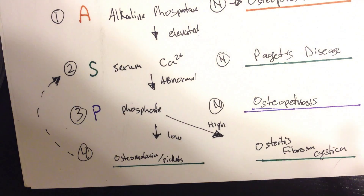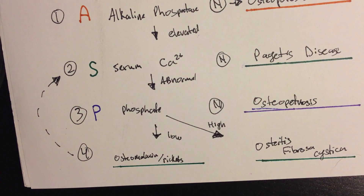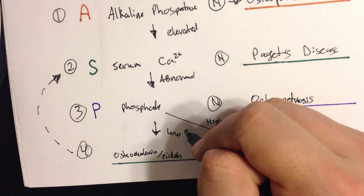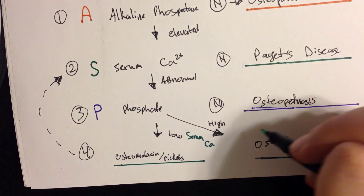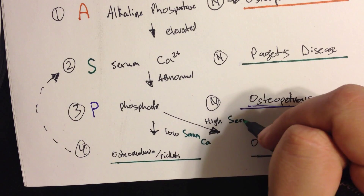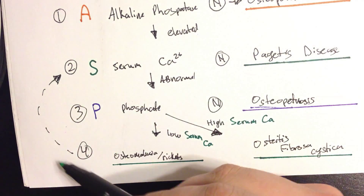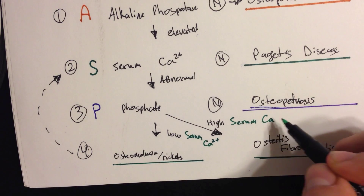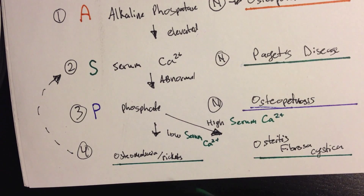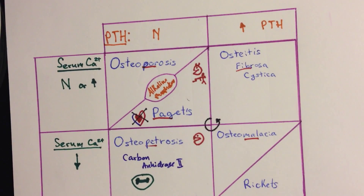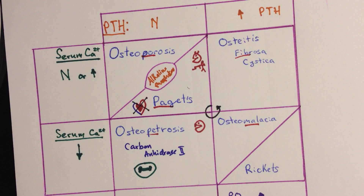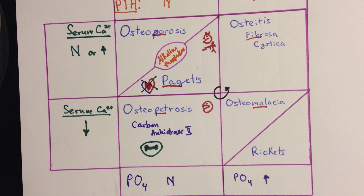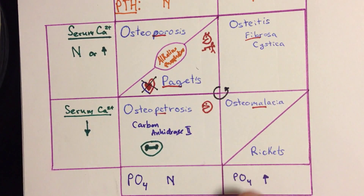If the phosphate comes out normal, look at serum calcium — low serum calcium or high serum calcium. This chart can be memorized by following it in reverse order if you know which lab values to follow and in which order. The mnemonic is 'A Simple Plan': start with alkaline phosphatase, follow with serum calcium, then phosphate. If you still don't have your answer — good luck.